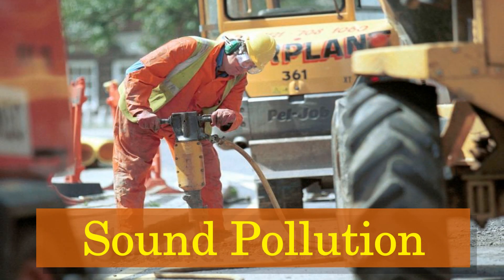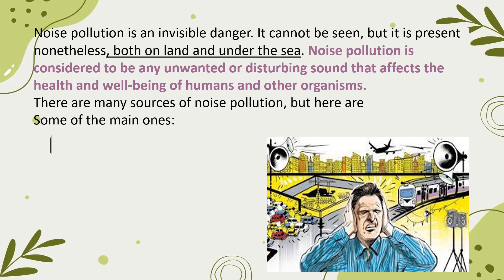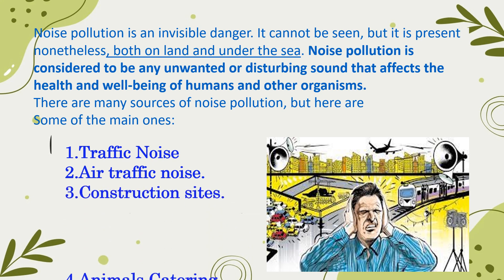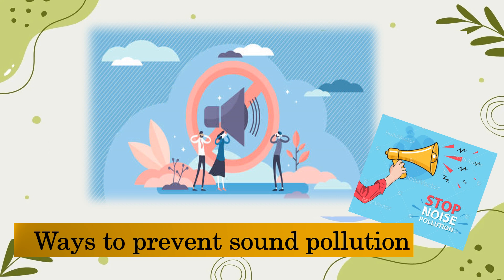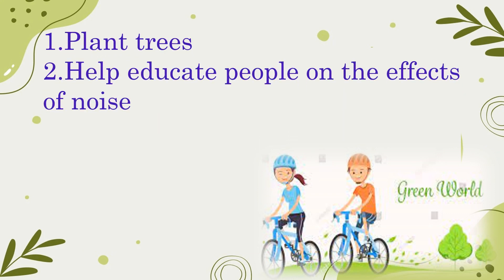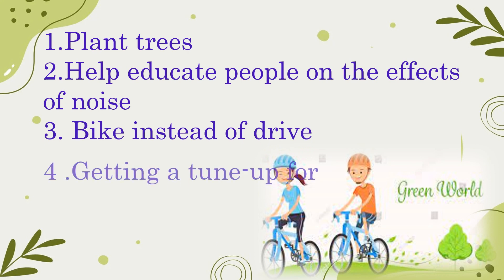The final type of environmental pollution covered is sound pollution. Noise pollution is an invisible danger — it cannot be seen, but it is present nonetheless, both on land and under the sea. Noise pollution is considered to be any unwanted or disturbing sound that affects the health and well-being of humans and other organisms. Main sources include traffic noise, air traffic noise, construction sites, animals, catering, and nightlife. Ways to prevent noise pollution include planting trees, educating people on its effects, biking instead of driving, and getting a tune-up for vehicle engines.